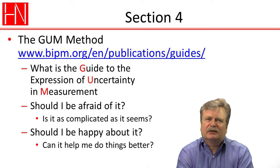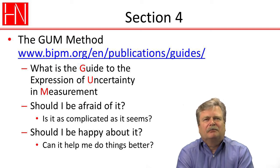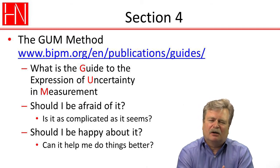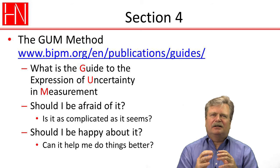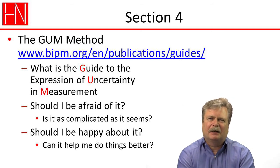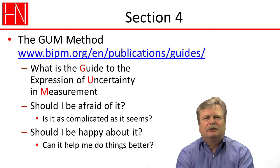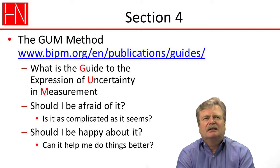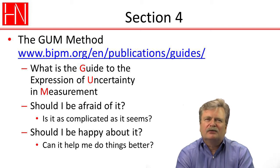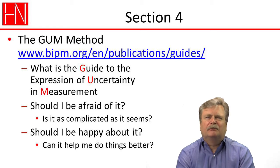If you look at the guide, you'll see there's a lot of sometimes very complicated math in there, which might raise the question: is it really as complicated as it seems? The GUM is written to be correct to the nth degree — statistically rigorous and correct in all cases where it's applied. But if we back off from that rigor just a little bit and simplify things in ways that really don't make much change to the final result of the uncertainty budget, then we can simplify that math quite considerably, making it not as complicated as it may seem.